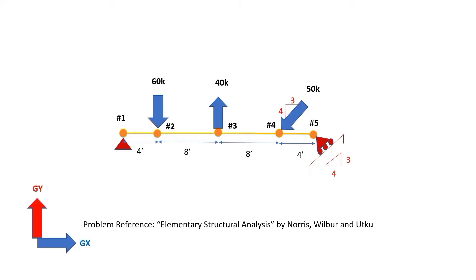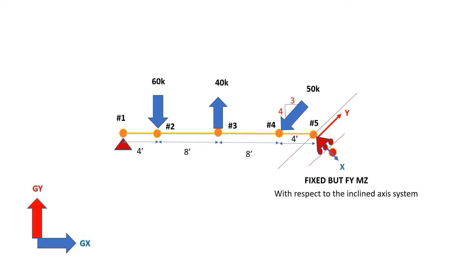We have seen that in order to model the system in STAAD.Pro, especially when we have to model the inclined roller support, we have to set up an inclined axis system with the help of a reference point — denoted in red in this picture. Based on that reference point we establish the x and y axis of the inclined axis system. The roller support needs to be defined as a fixed but FYMZ support. For details, please refer to the session linked on the top right of your screen.